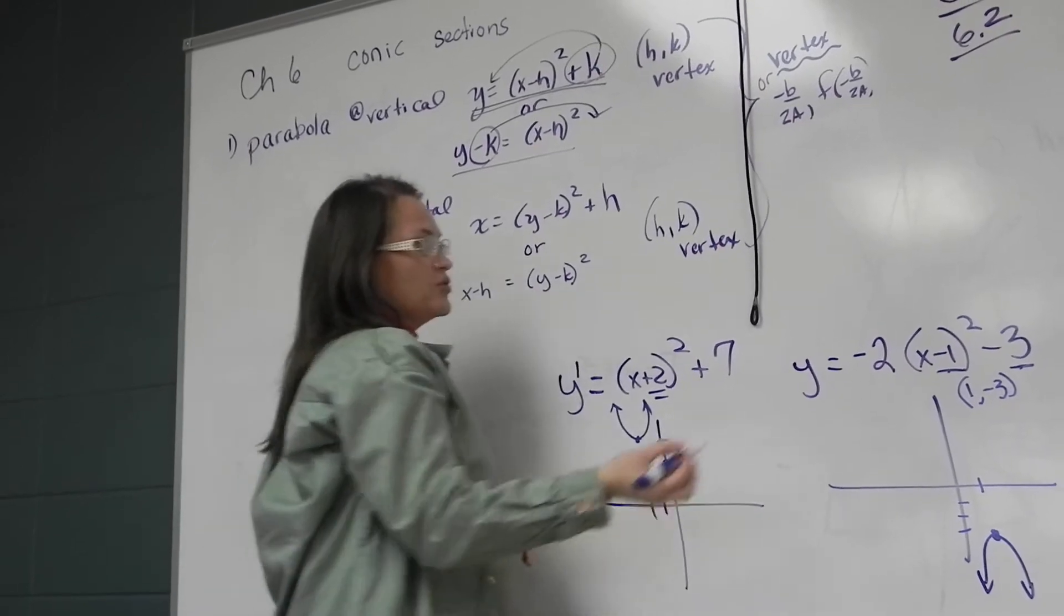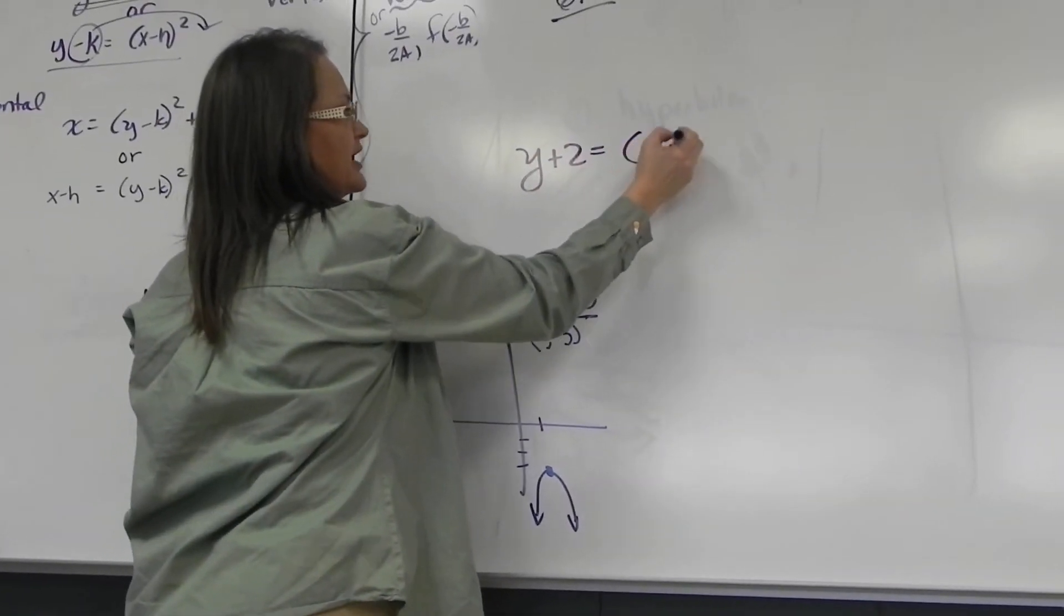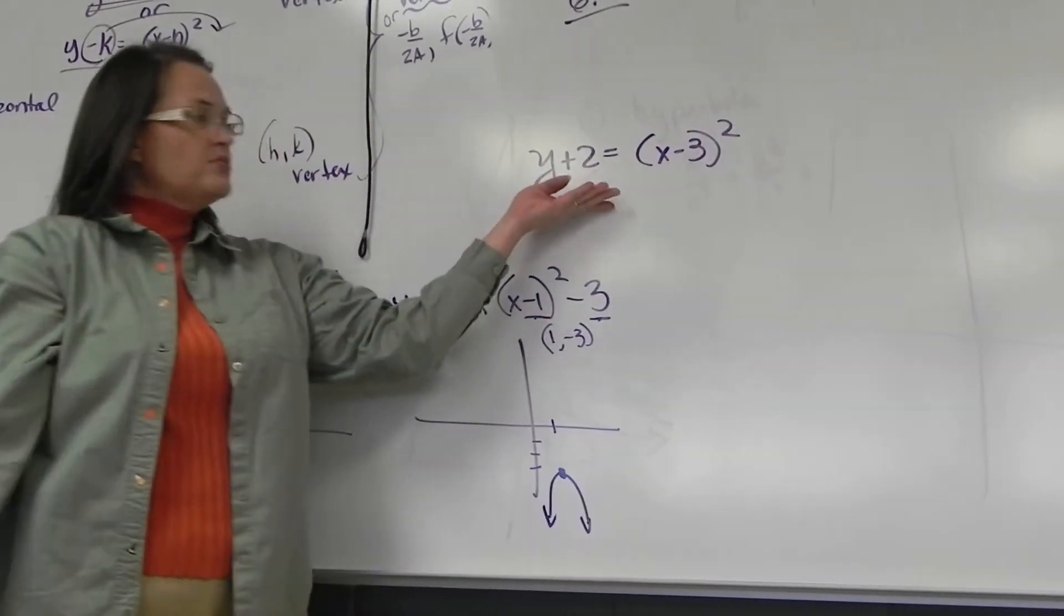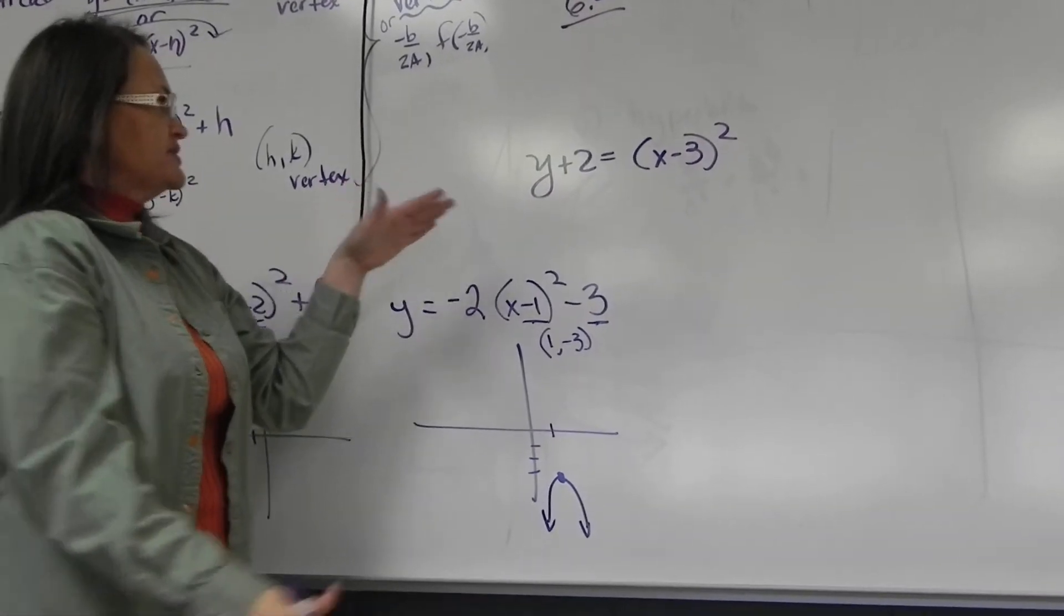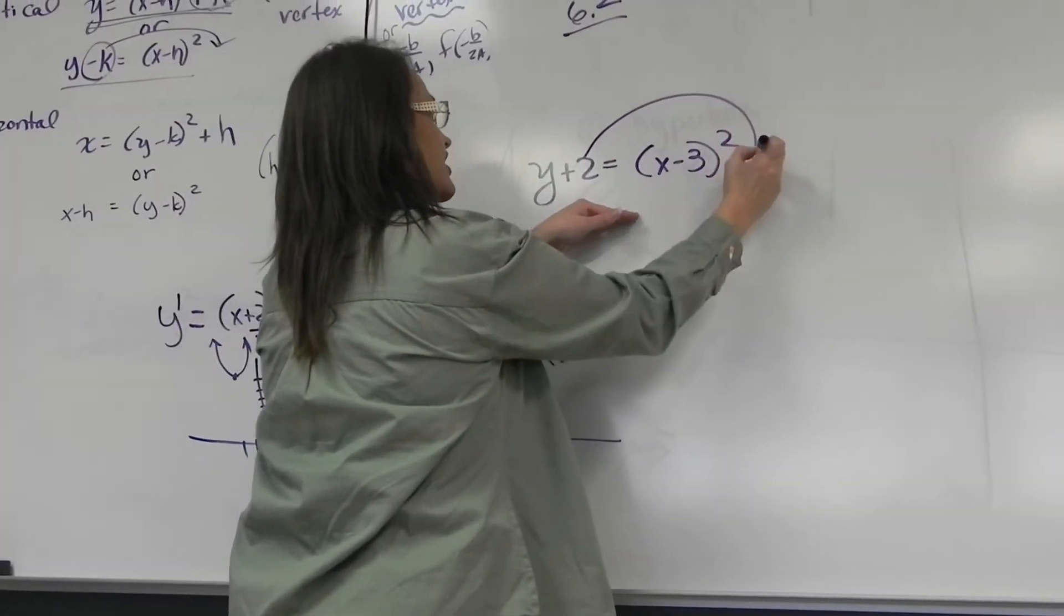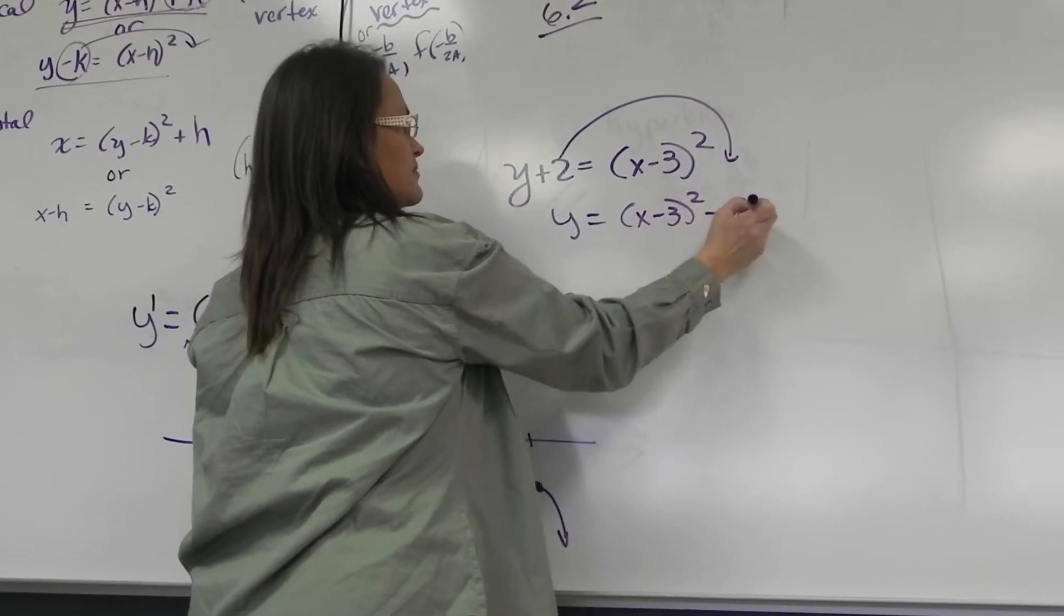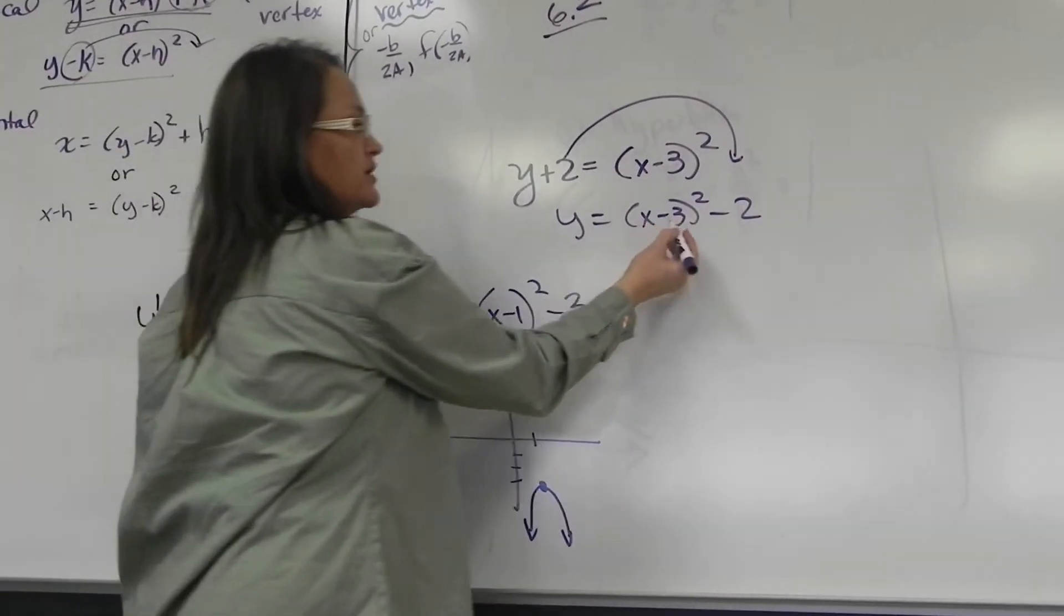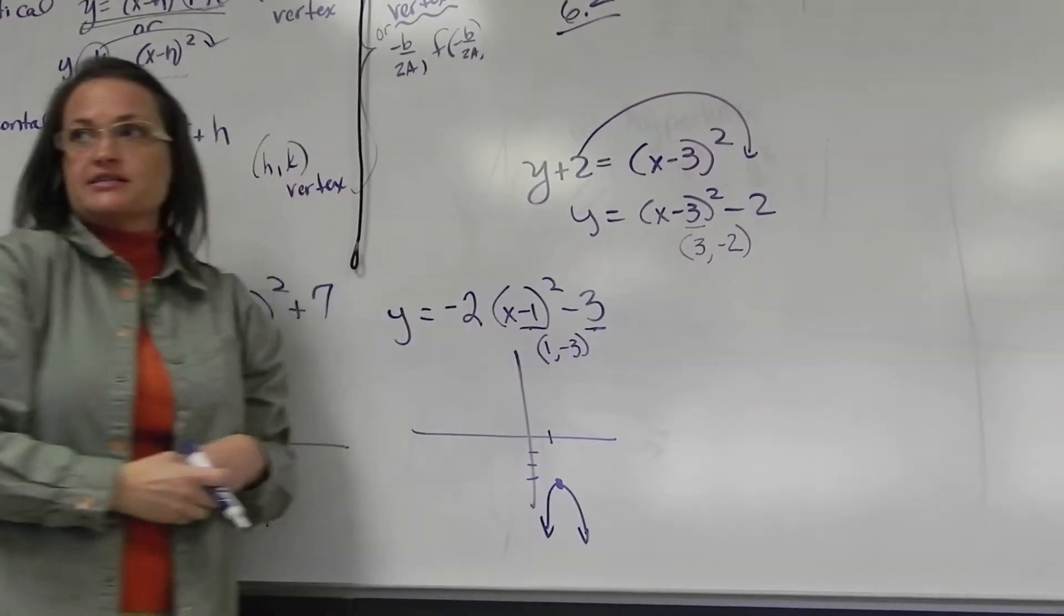So let's say your problem on Math Excel might say Y plus 2 equals X minus 3 squared. That would be the new way it would throw that problem at you. If you don't want to see it that way, just first thing, throw the 2 across the line and say that's the way I'm used to looking at it. So the vertex is positive 3, negative 2, like so.